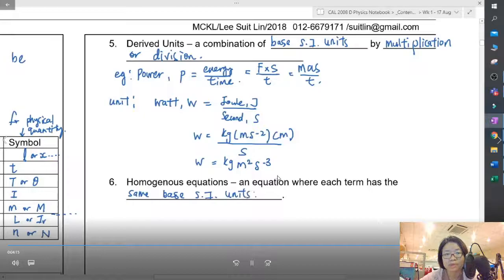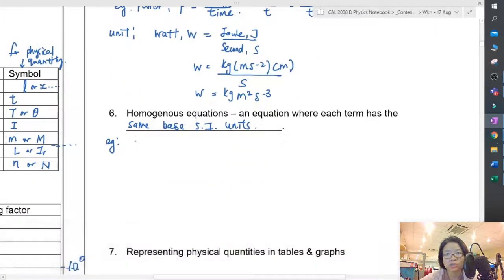The next point would be homogeneous equations - an equation where each term has the same base SI unit. For example, this equation s = ut + (1/2)at² - I will derive this in chapter three.